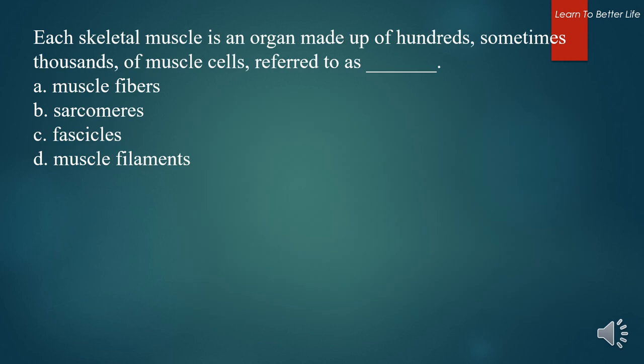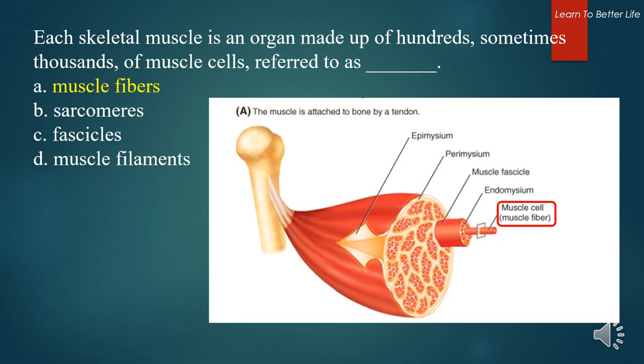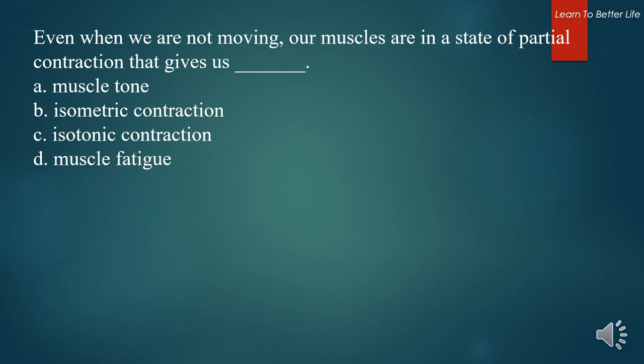Each skeletal muscle is an organ made up of hundreds, sometimes thousands, of muscle cells, referred to as what? A. Muscle fibers. B. Sarcomeres. C. Fascicles. D. Muscle filaments. The answer is A. Muscle fibers. Even when we are not moving, our muscles are in a state of partial contraction that gives us what? A. Muscle tone. B. Isometric contraction. C. Isotonic contraction. D. Muscle fatigue. The answer is A. Muscle tone.